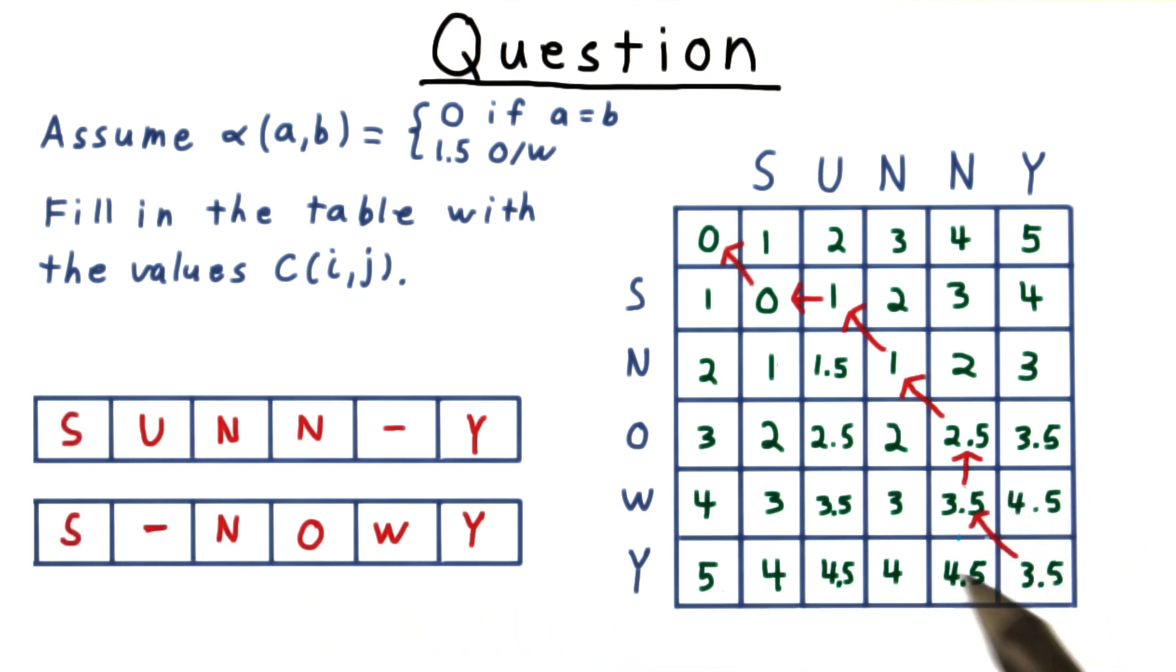Often, there will be more than one path through the grid. In this example, there was some ambiguity at this step here. Instead of skipping w, I could have matched it with n, and then we could have left the o unmatched. And that would have left us with this alignment here, which has the same minimum cost.